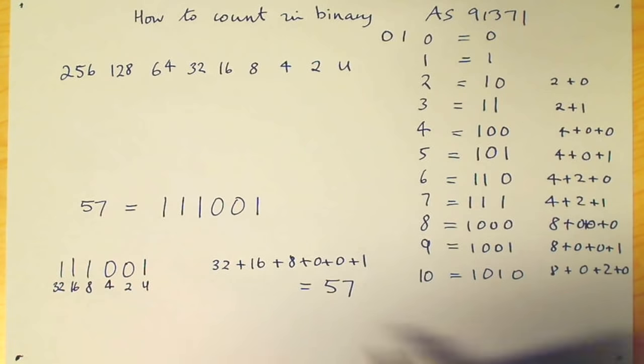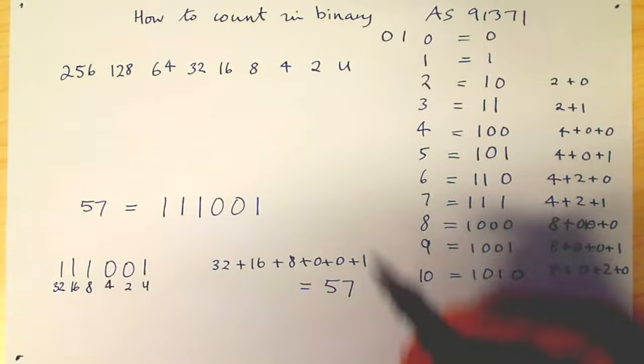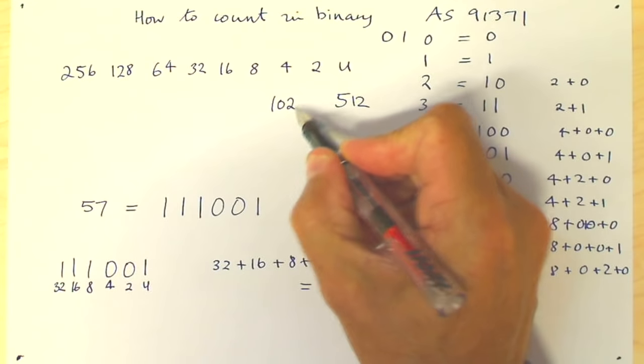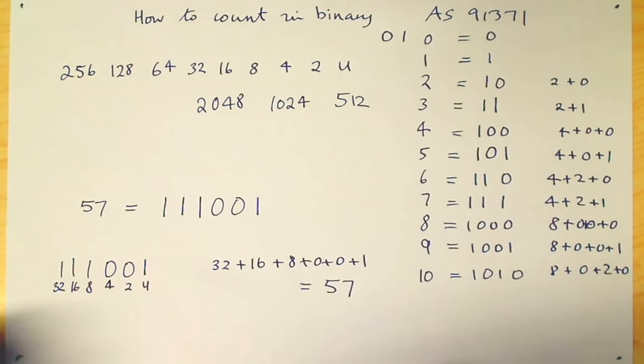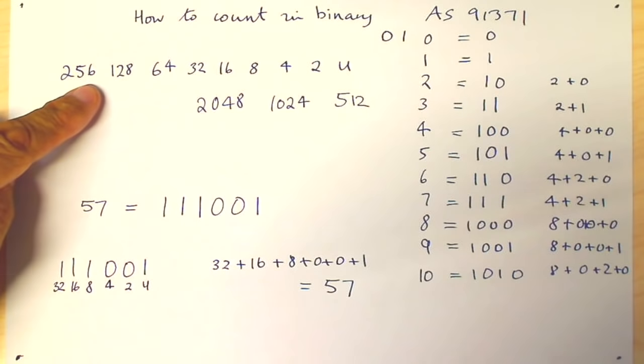That works for any number. If we were to quickly calculate what numbers go beyond 256, they're really easy: 512, 1024, 2048, and so on, 4096. Some of these numbers are quite significant. We will get into later.